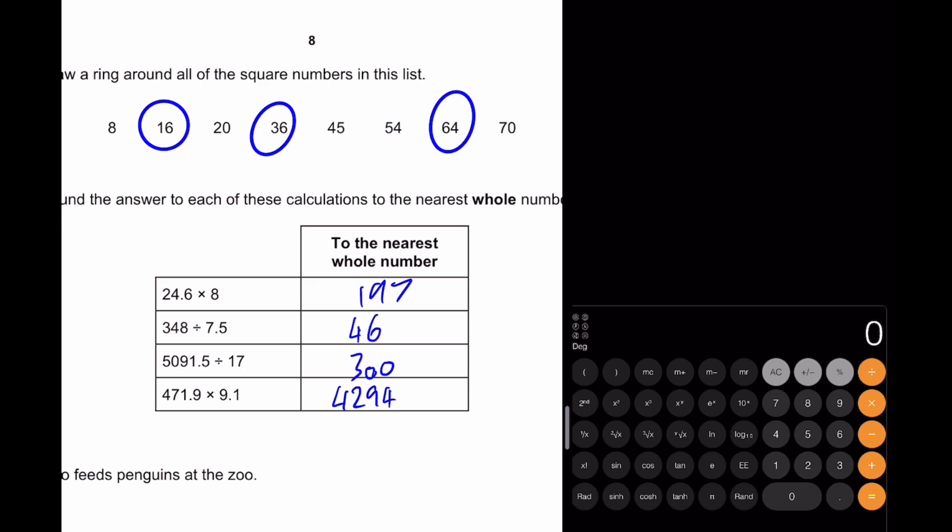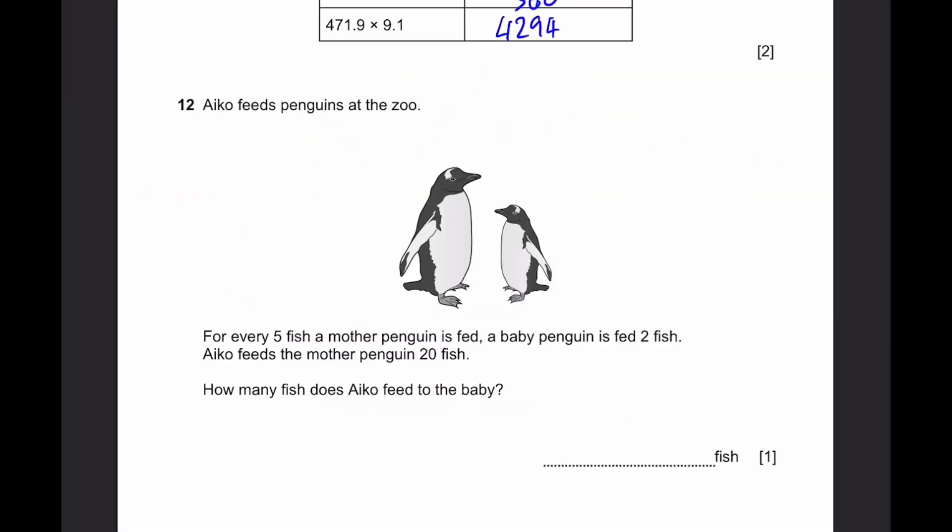Let's go to question 12. Ico feeds penguins at the zoo. For every 5 fish a mother penguin is fed, a baby penguin is fed 2 fish. Ico feeds the mother penguin 20 fish. How many fish does Ico feed to the baby? So the mother penguin gets 20 fish, that'll be equal to 4 into 5. The baby penguin will get 4 into 2, which is equal to 8 fish. That's the answer.